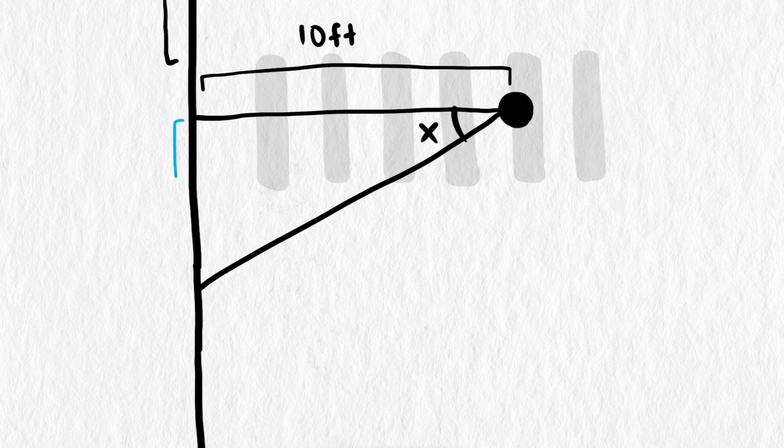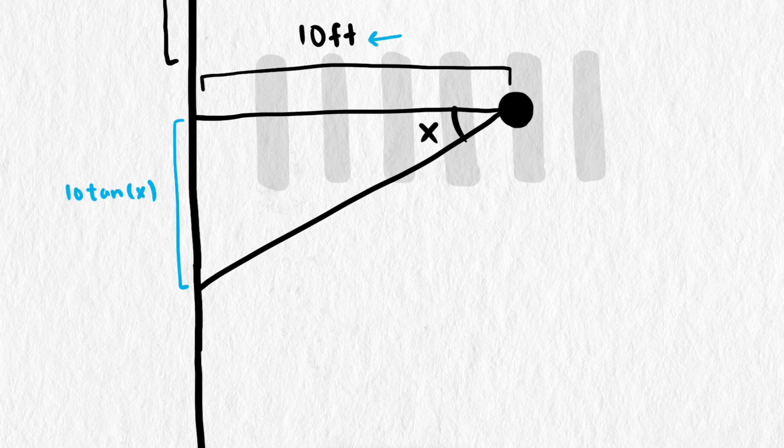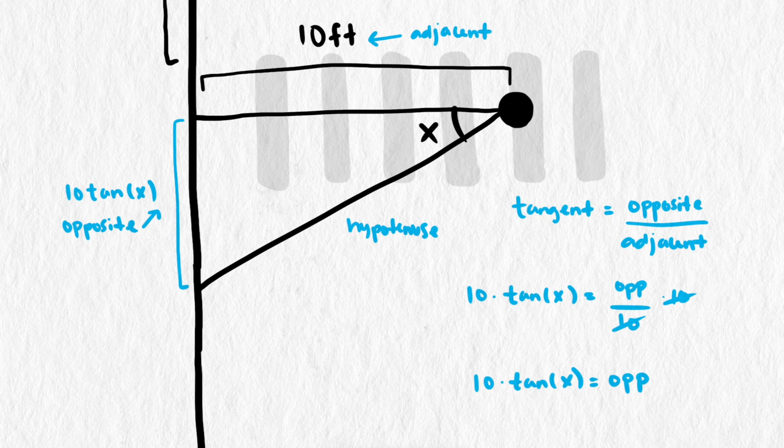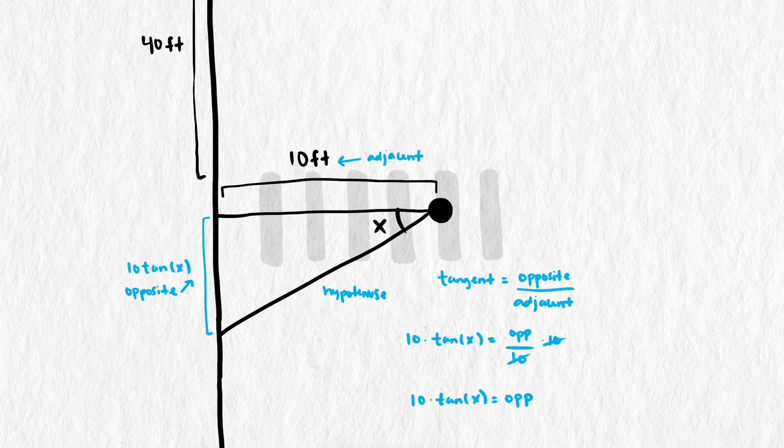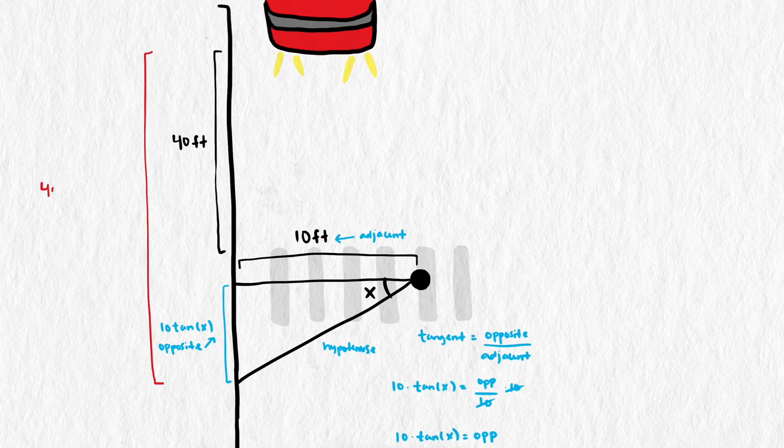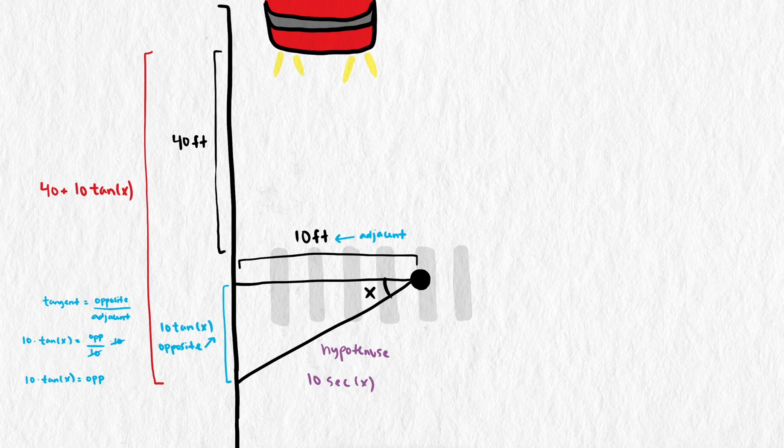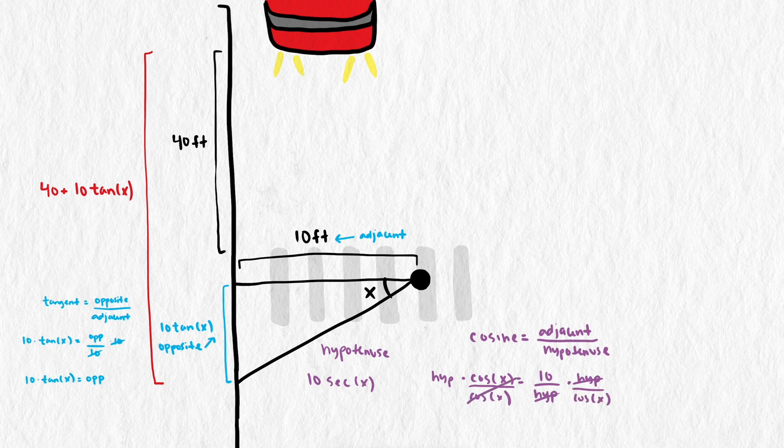The distance down the curb can be calculated by 10 times tangent of x. We want to use tangent here because we know the length of the adjacent leg to this angle, and we want to know the length of the opposite side. Tangent or cotangent are the functions that give the ratios of these two sides. So we can write the truck's distance as 40 plus 10 times tangent of x. Sarah's distance, the hypotenuse of the triangle, can be written as 10 times secant of x, or if you're more comfortable with cosine, 10 divided by cosine of x. We use cosine or secant because they are ratios of the length of the adjacent leg, which we know, and the hypotenuse.